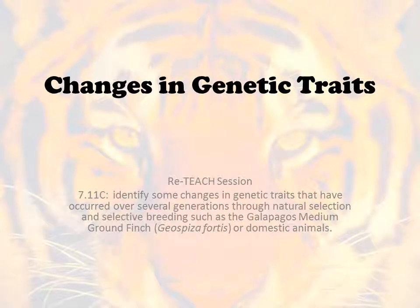Hey Tigers, welcome to your digital reteach session for changes in genetic traits. In this digital reteach we'll cover Texas Essential Knowledge and Skill 7.11c. In this TEKS, it is your job to identify some changes in genetic traits that have occurred over several generations through natural selection and selective breeding, such as the Galapagos medium ground finch and other domestic animals.